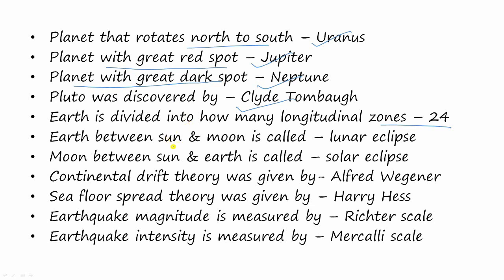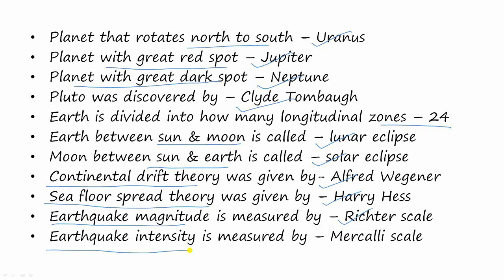When earth is between the sun and moon, it is called a lunar eclipse. When the moon is between the sun and earth, it is called a solar eclipse. The continental drift theory was given by Alfred Wegener, and the sea floor spreading theory was given by Harry Hess. Earthquake magnitude is measured by the Richter scale and earthquake intensity is measured by the Mercalli scale.